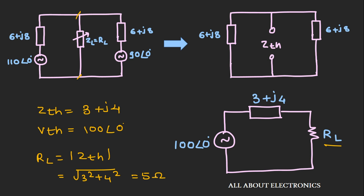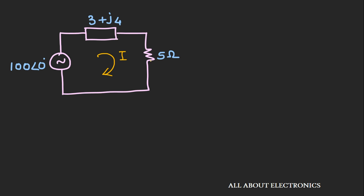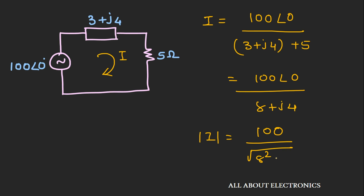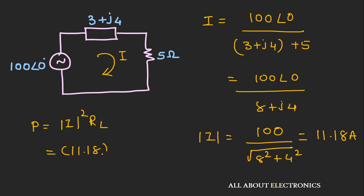Now let's find the maximum power delivered across the 5 Ω load. The current I = 100 / (3 + j4 + 5) = 100 / (8 + j4). The magnitude of I is 100 / √(8² + 4²) ≈ 11.18 A. The power P = I²·RL = 11.18² × 5 ≈ 625 W.